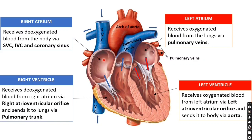Between the atrium and ventricle in both sides, there is a valve present. This valve ensures proper flow of blood and prevents backflow — the ventricle cannot push blood back to the atrium. There are 4 valves in the heart. On the right side, between the right atrium and right ventricle, this valve is called the tricuspid valve.